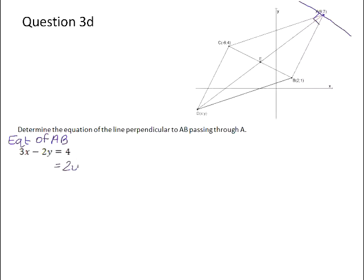So if we rearrange that into standard form and divide through by 2, you get Y equals 3 over 2X minus 2. So that means the gradient of AB is equal to 3 over 2.